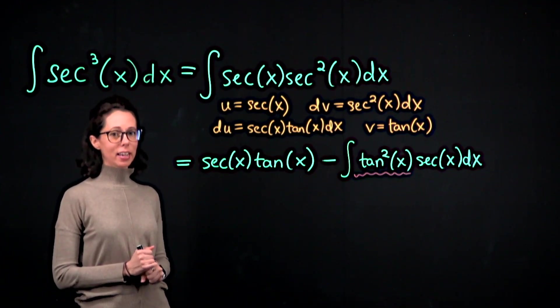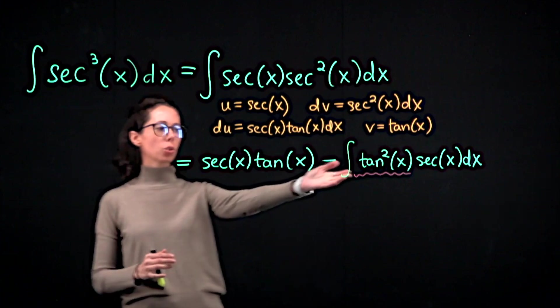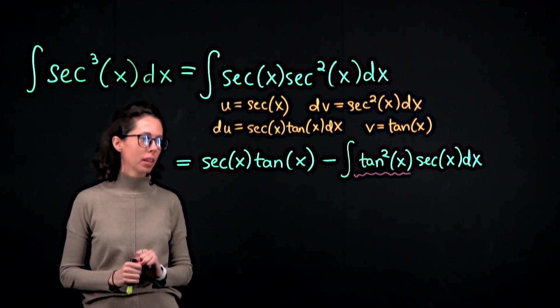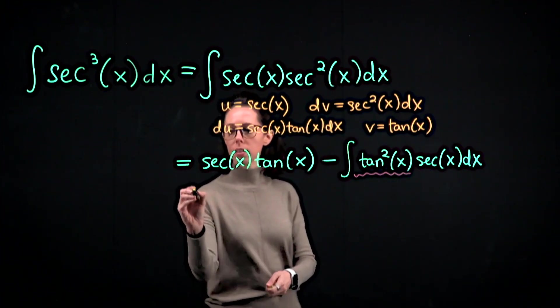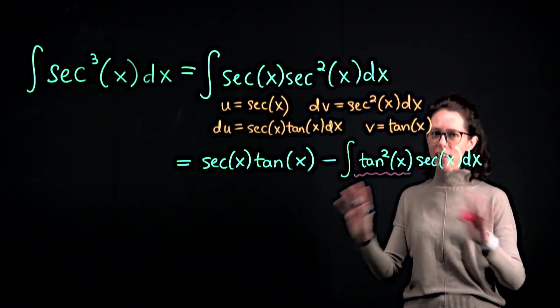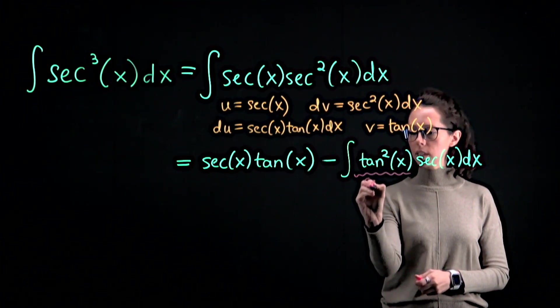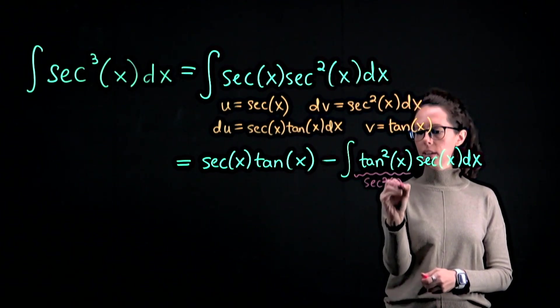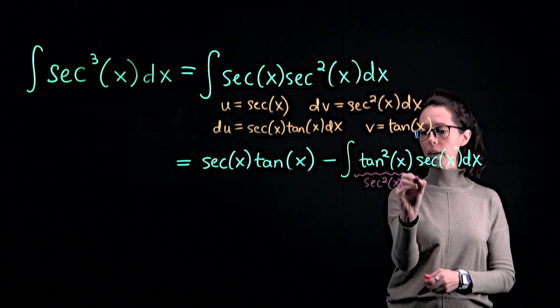The Pythagorean identity that relates tangent and secant is that one plus tangent squared is secant squared. So tangent squared is secant squared minus one. Let me actually write that here because on the next line I'm going to bring that in and split this up into two integrals at the same time. So just to make it clear what's happening, this first expression is going to get replaced with the square of the secant function minus one.